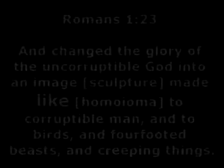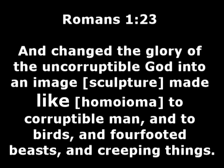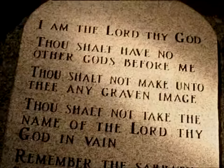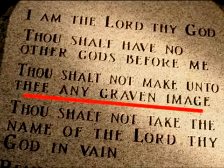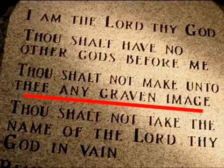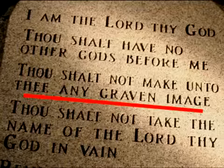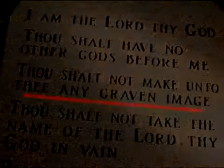Paul uses the word homoieoma, or likeness, several times. Let's look at two instances not related to Jesus and see how Paul uses this word in those cases. Here, Paul is talking about the commandment against making sculptures of anything, and his use of homoieoma is clearly understood. It means the objects being compared look similar, but are fundamentally different.